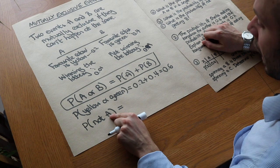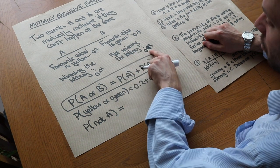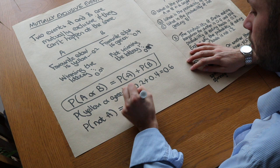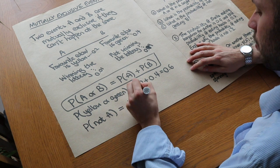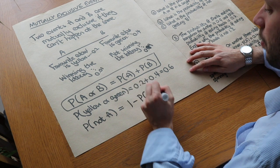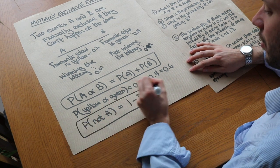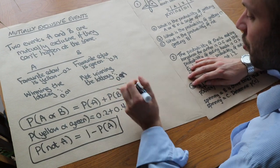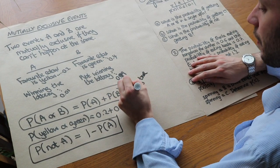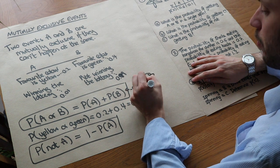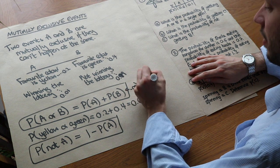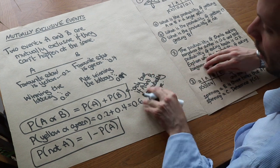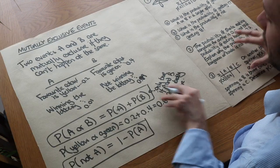Therefore, the probability of A not happening — like not winning the lottery — is just 1 minus the probability of it happening. I'll put a box around that because it's very important. Note that this is only true if A and B are mutually exclusive, and we'll see an example later where that might not be the case.